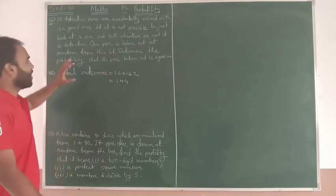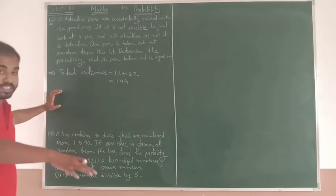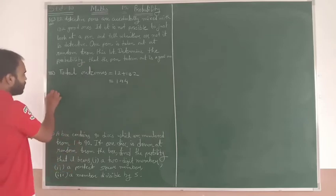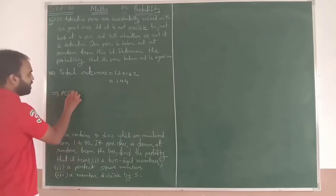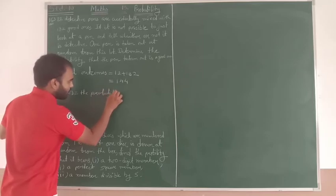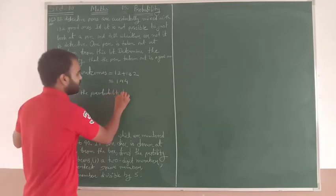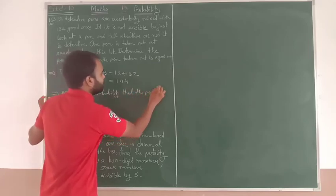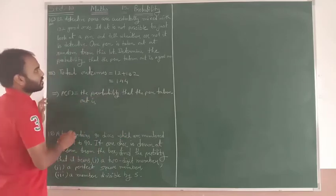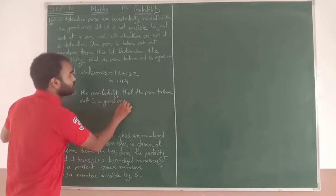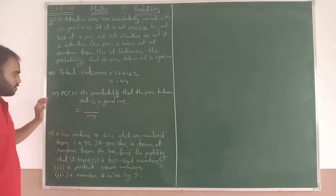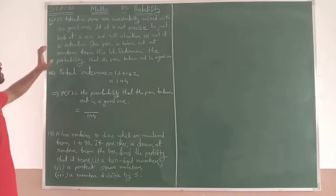So one pen is taken out at random from this lot. One pen is taken out randomly and determine the probability that the pen taken out is good one. So we will write P(E). We will write P(E) is the probability that the pen taken out is a good one. So total outcomes will be 144 as we all find out. Now, good one. So how many good pens are there in the lot? 132.